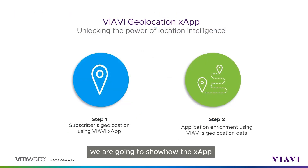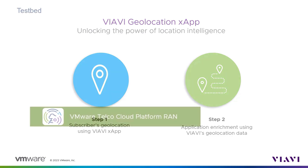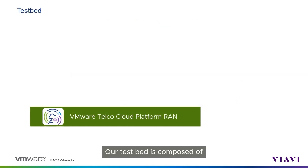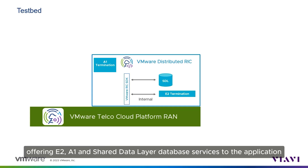In this demo, we are going to show how the XApp can ingest network measurement data to produce a real-time feed of subscriber geolocated segments. Our testbed is composed of the VMware Distributed RIC, offering E2, A1, and shared data layer database services to the application.